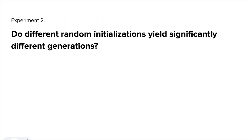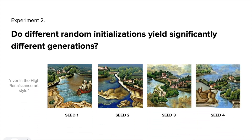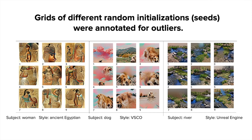For the second experiment, we tested different random seeds to understand if different seeds paired with the same prompt would yield significantly different generations. The motivation was to understand whether users would need to try multiple different seeds before moving on to new combinations of keywords. For this experiment, we had a similar setup, generating 12 subjects and 12 styles, but now with 9 different seeds.